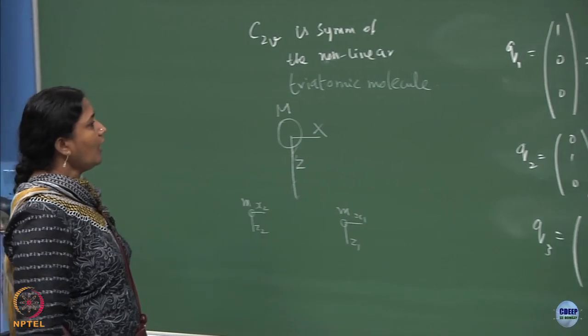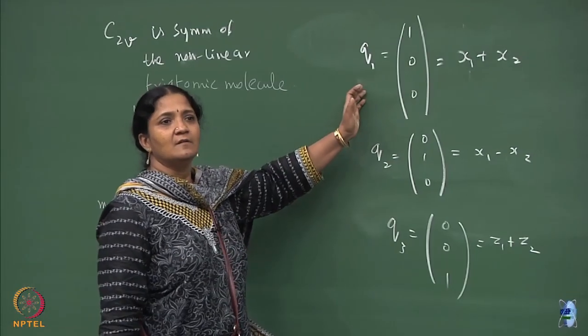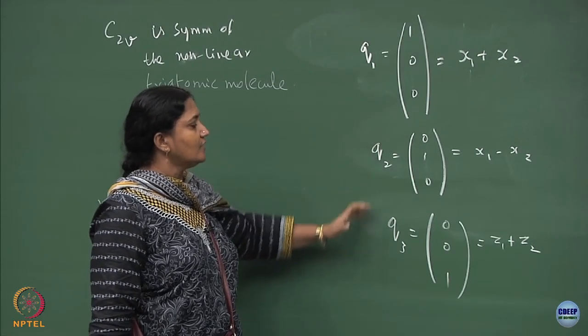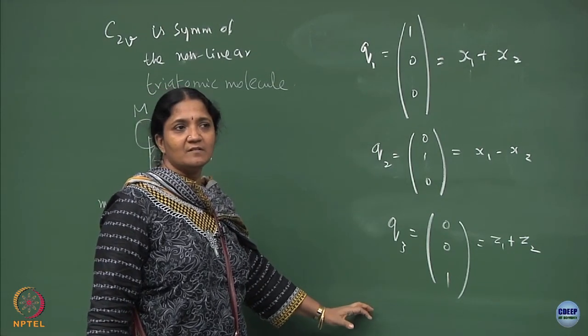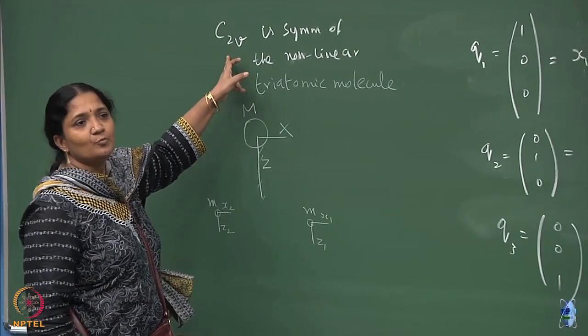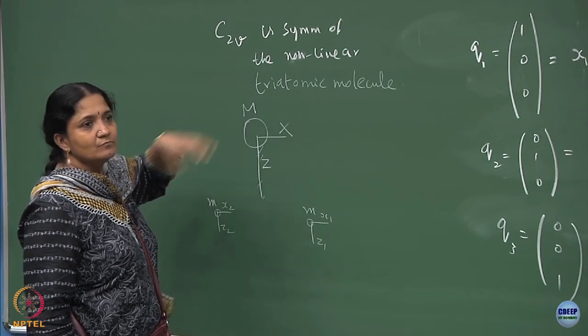So now, how do I write in this basis - in terms of the q1, q2, q3 basis - I want to write the matrix representations of all the elements of C2v.